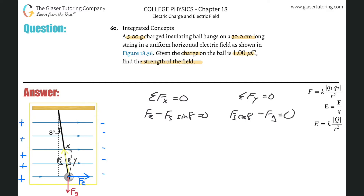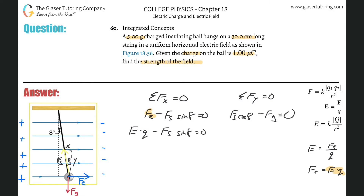The formula on the right-hand side tells us the electric field E equals the electric force divided by the charge in that field. Solving for electric force: F_e equals E times q. Substituting into the x-equation: E times q minus F_s times sine of 8 degrees equals zero.